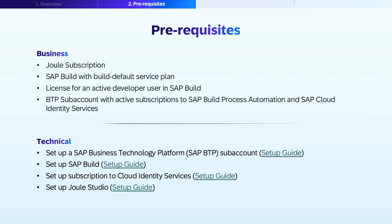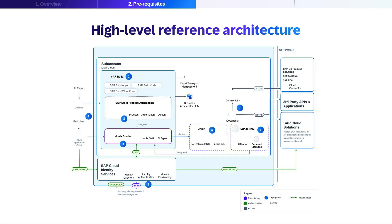Before implementing, let's cover the prerequisites needed. You'll need an SAP Business Technology Platform subaccount, a subscription to Joule, SAP Build with Build Default Service Plan, a license for Active Developer in SAP Build, and a subscription to Cloud Identity Services. After setting up those prerequisites, you'll be ready to extend Joule.